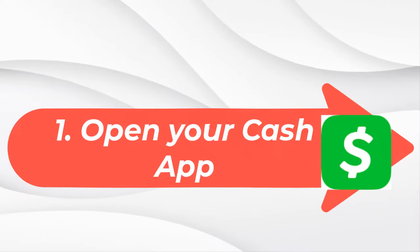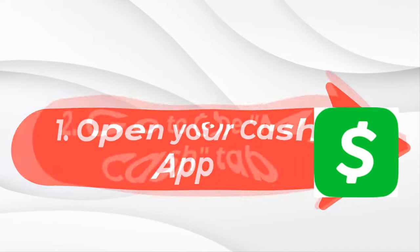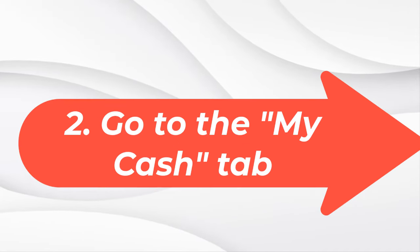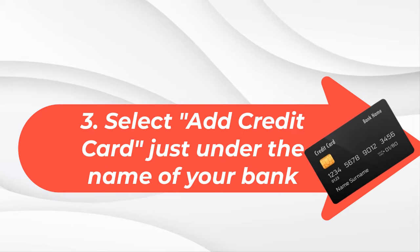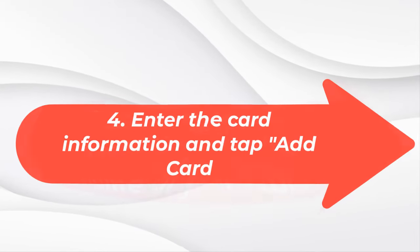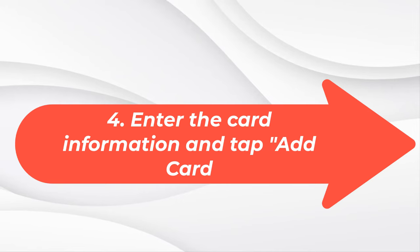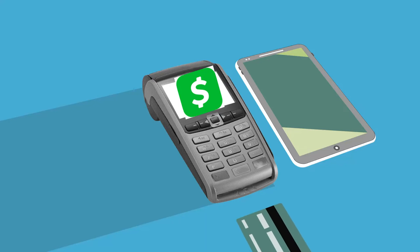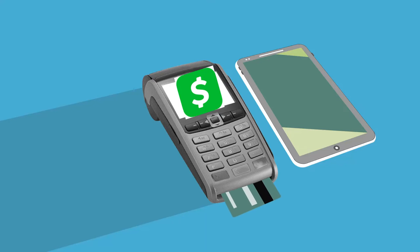1. Open your Cash App. 2. Go to the My Cash tab. 3. Select Add Credit Card, just under the name of your bank. 4. Enter the card information and tap Add Card. Once you follow these steps properly, your credit card can now serve as a funding source for Cash App transactions.